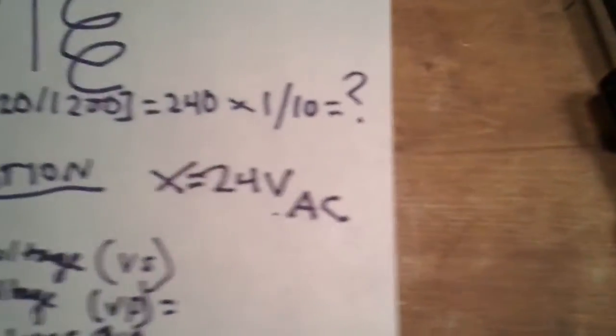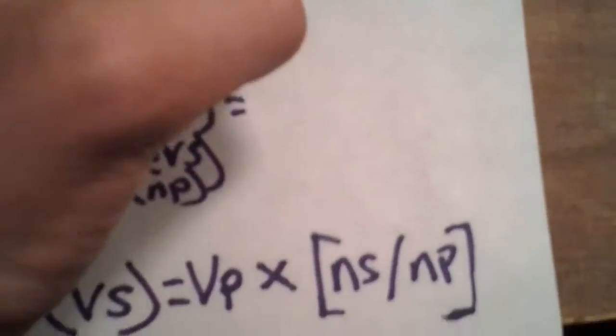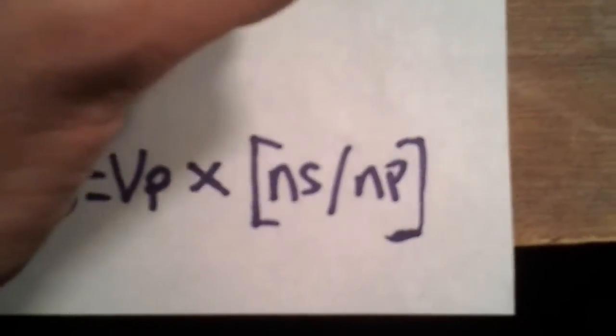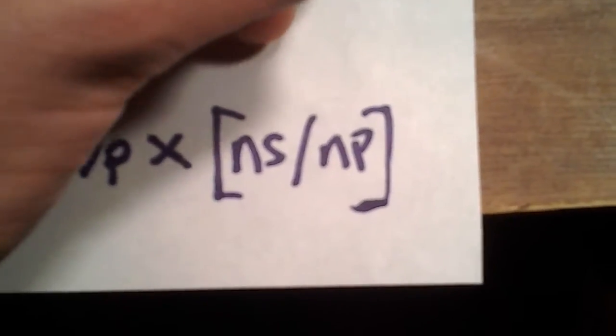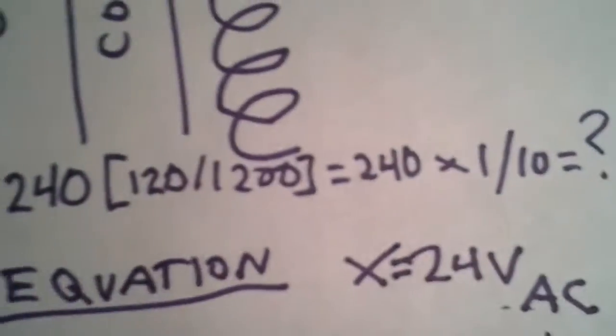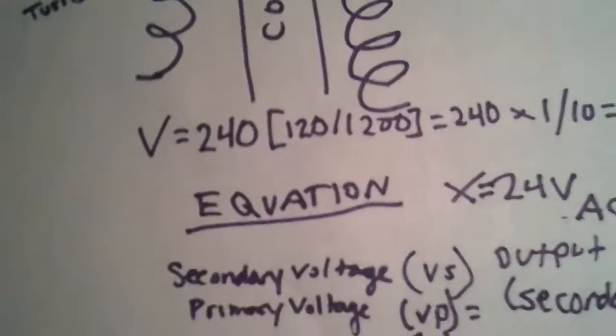24 volts alternating current on the output, which is the secondary winding. There you go, simple as that. You just have your iron core, your two windings, and you just got to calculate this equation to figure out what the output voltage would be.